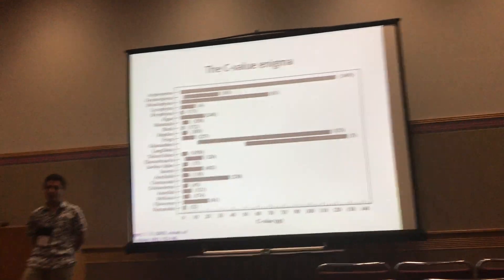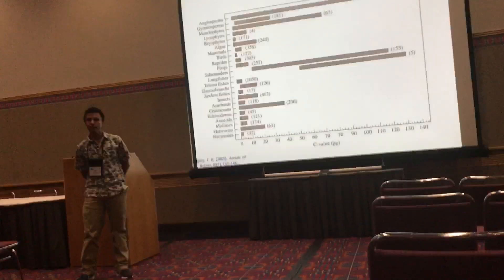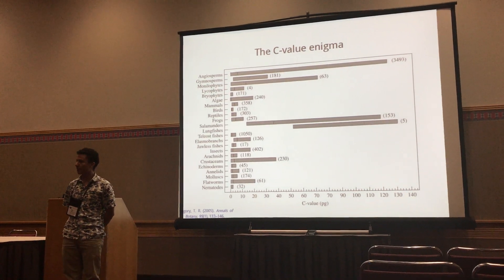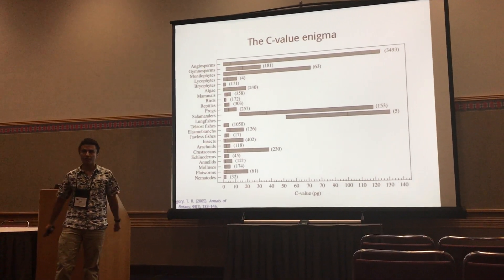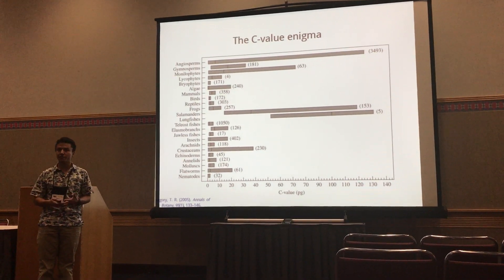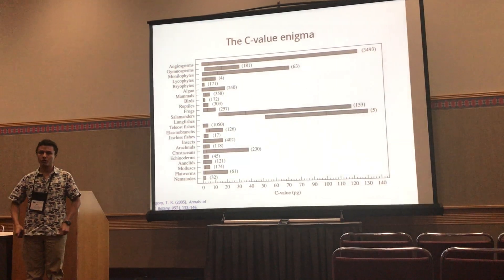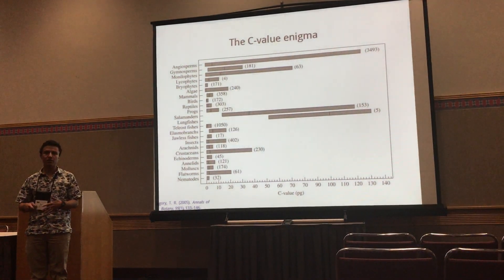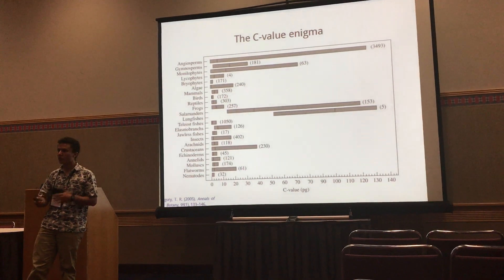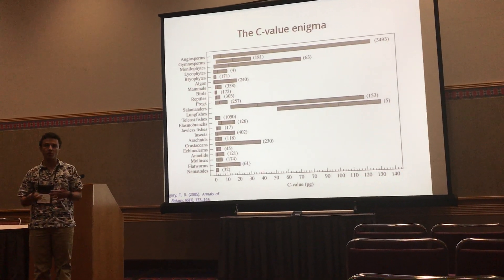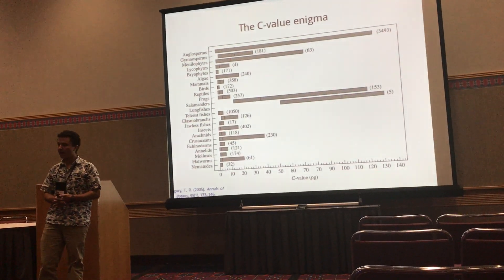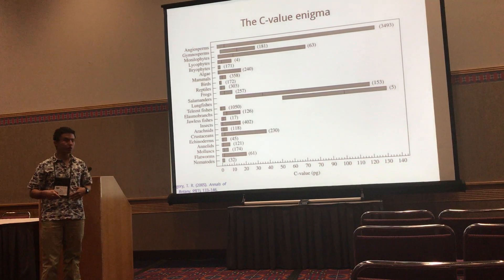We are all familiar with the C-value enigma. We know that the genome sizes of organisms vary a lot in different groups, and in the beginning researchers didn't know why this happened. Now we know that genome size is not correlated with gene content, but we are still not sure why there is so much variation in some organisms and not others.